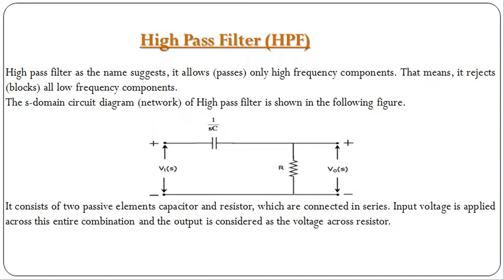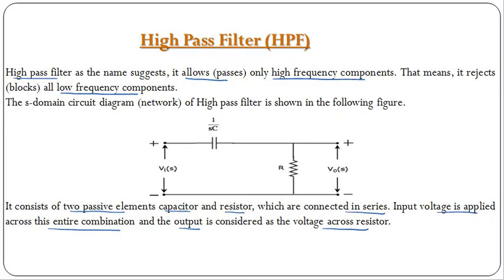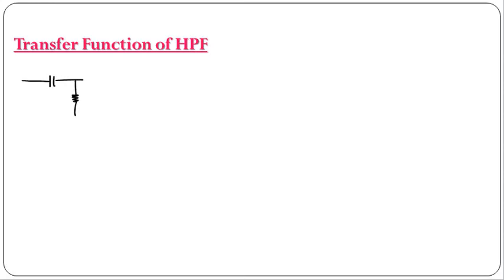Now let us see the high pass filter. As the name suggests, it passes high frequency components only and blocks low frequency components. The circuit also consists of resistors and capacitors but here the output is taken across the resistor. The two passive elements, capacitor and resistor, are connected in series with input applied across the entire combination and output taken across the resistor.